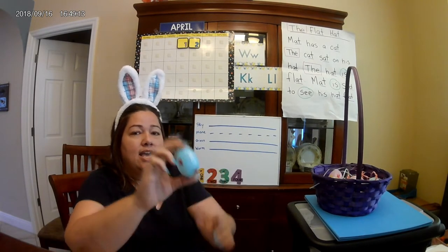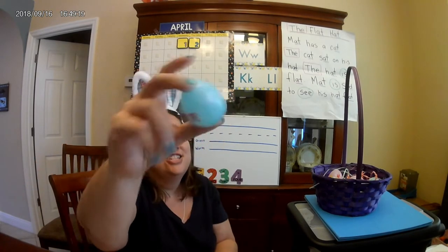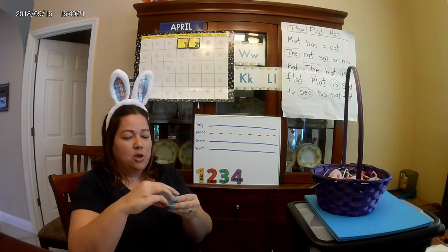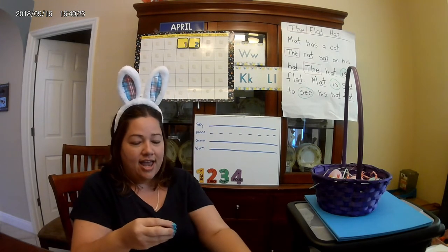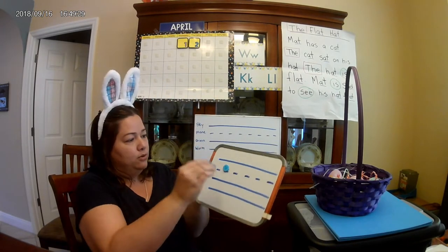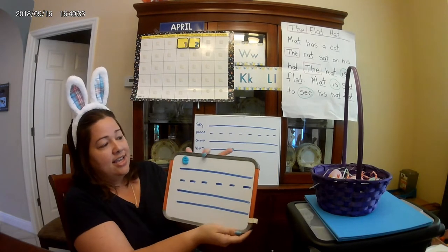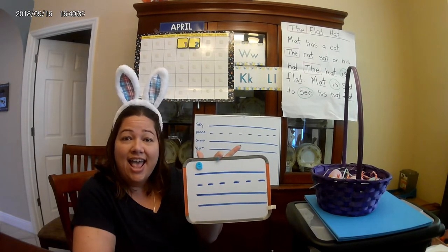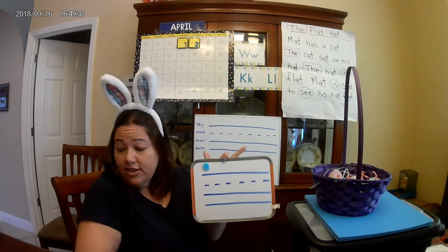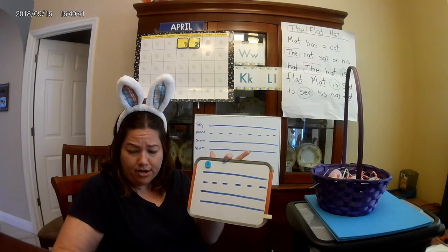Here we go — a nice blue egg with some bunnies on it. Hey, they got ears like me. Shake, shake, shake. Let's open it up. I've got the letter E. Alright, I'm going to put this on my board. My letter E — E says the short E sound. So for letter E, let me get my marker here. Hopefully you have your paper and your pencil ready to go and ready to write some letters today.